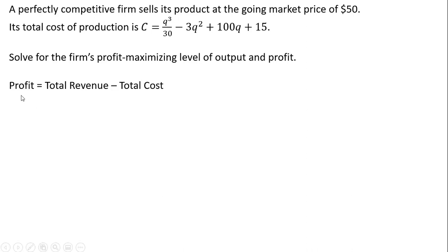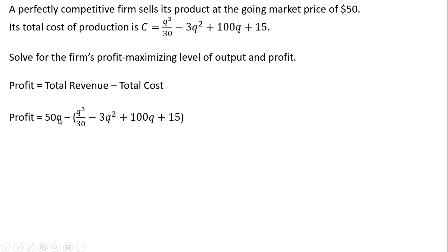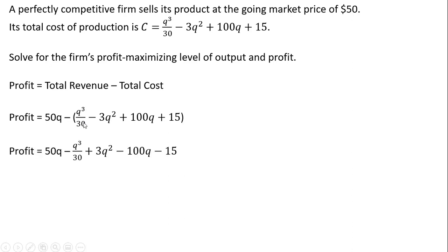We're going to start by creating our profit function, which in general is just total revenue minus total cost. Total revenue is the price — in this case $50 — times the quantity. So 50 times Q represents total revenue. Then we subtract out total cost, putting parentheses around it because we're subtracting out all of the total cost. Distributing this minus sign through the parentheses, we get the following result.